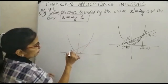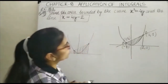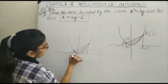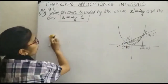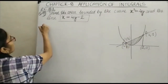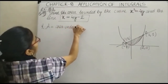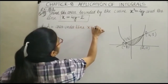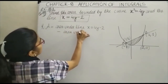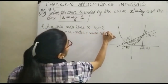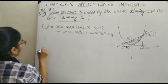When we take the area under the line from limit -1 to 2, we get the whole area above the x-axis. Subtracting the area under the curve from that gives us the required area. So: Required Area = Area under line x = 4y - 2 minus Area under curve x² = 4y, with limits from -1 to 2.